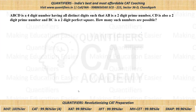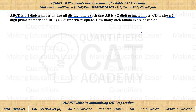Here is the question — please pause the video and give it a try. ABCD is a four-digit number having all different digits such that AB is a two-digit prime number, CD is also a two-digit prime number, and BC is a two-digit perfect square. How many such numbers are possible?